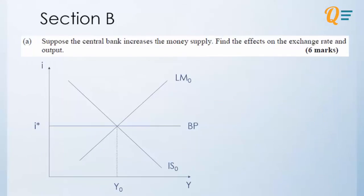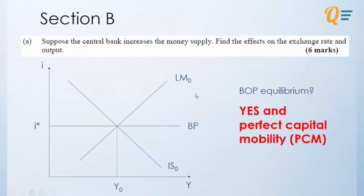Now for the first part of question 15, they're saying that the central bank increases money supply. So we're supposed to find the effects on the exchange rate and the output. So first thing, is there a balance of payment equilibrium? Yes, and we assume that there is perfect capital mobility.